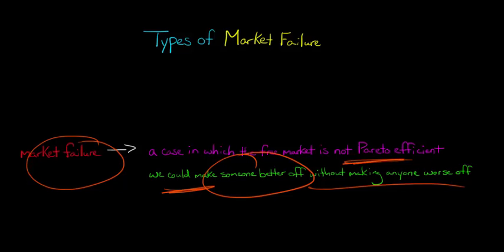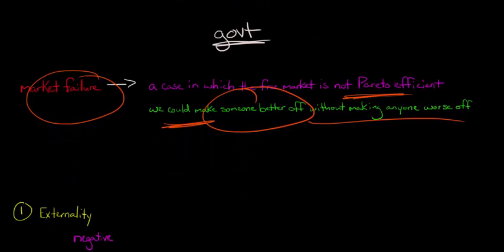Some people would say that implies a role for government intervention. Then the government could come in and implement a policy that could get us to that Pareto efficient outcome. Let's talk about some examples.